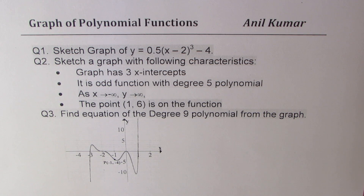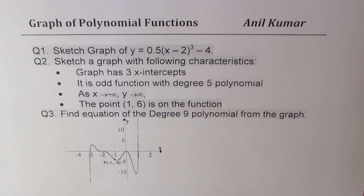Question number one: sketch the graph of y equals 0.5 times x minus 2, whole cubed, minus 4. Question two: sketch a graph with the following characteristics — the graph has three x-intercepts, it is an odd function with a degree 5 polynomial. As x approaches minus infinity, y approaches positive infinity, and the point (1, 6) is on the function.